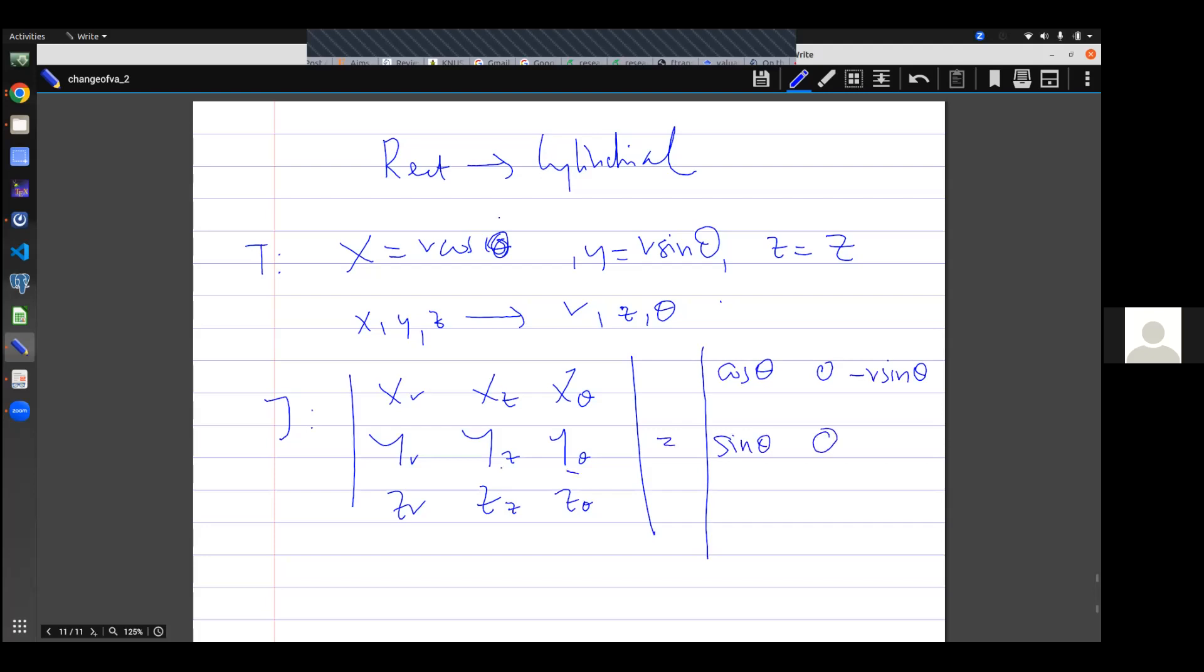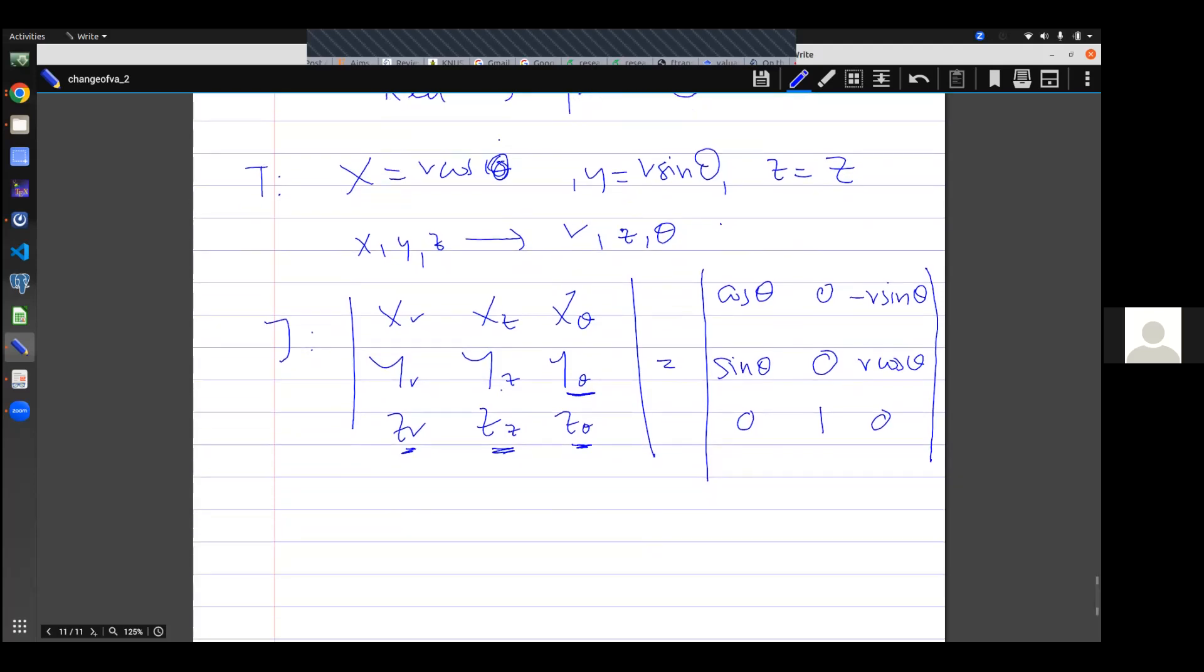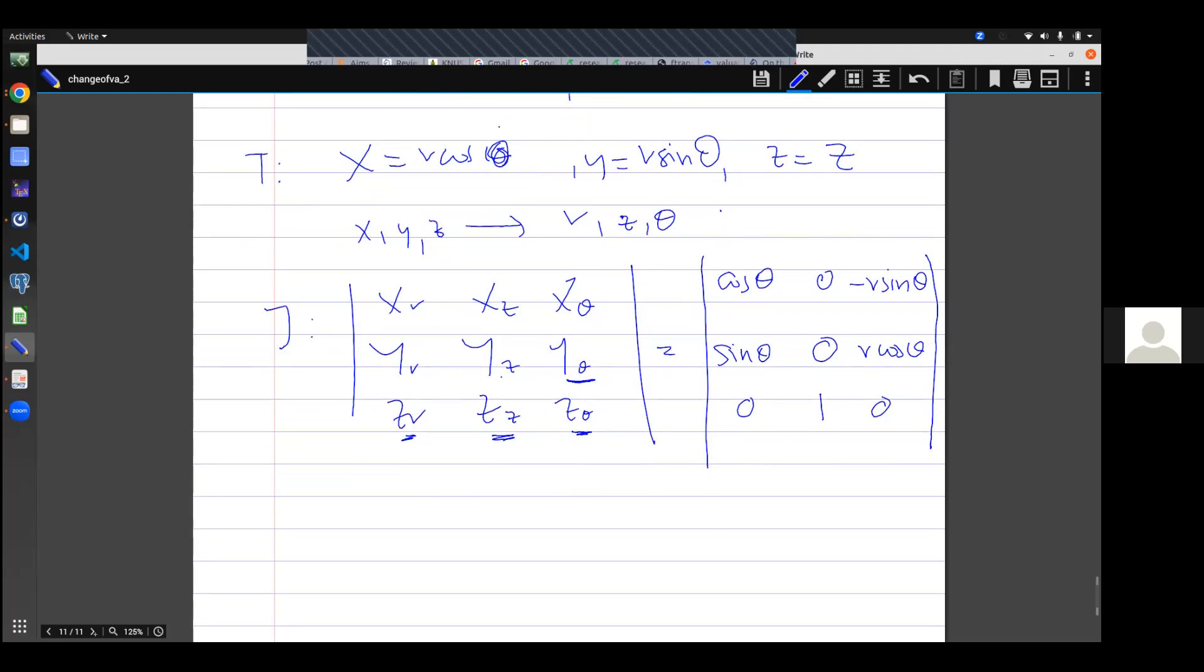∂y/∂z, zero. ∂y/∂θ gives me r cos theta. ∂z/∂r is zero. ∂z/∂z is one. ∂z/∂θ is also zero. This is a three-by-three matrix, or determinant of three-by-three. How do you do that?